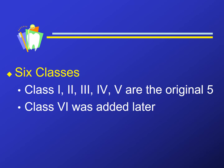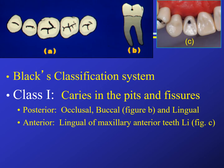There are six classes — originally there were only five. We will go through each class and define it. Class one is caries in the pits and fissures of teeth. Posteriorly, pits and fissures are found on the occlusal surfaces, on the buccal of the mandibular molars, and on the lingual of maxillary molars. In the anterior, there is often a pit in the lingual of maxillary anterior teeth.